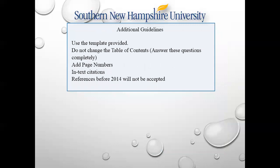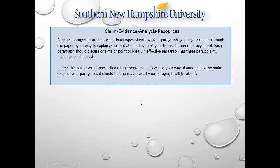Additional guidelines: use the template provided, do not change the table of contents, answer every one of these questions completely, add page numbers, and make sure you have in-text citations. Every reference you have needs to have an in-text citation — I don't care if you use it five times, make sure you have in-text citations. References before 2014 will not be accepted unless you contact me and explain why, because we want to keep this very current. Claim, evidence, analysis, resources: effective paragraphs are important in all types of writing. Your paragraphs guide readers through the paper by helping to explain, substantiate, and support your thesis statement. Each paragraph should discuss one major point or idea, and an effective paragraph has three parts: claim, evidence, and analysis.